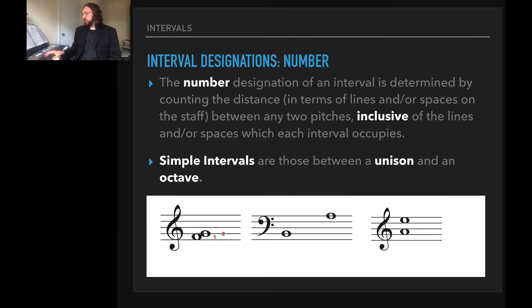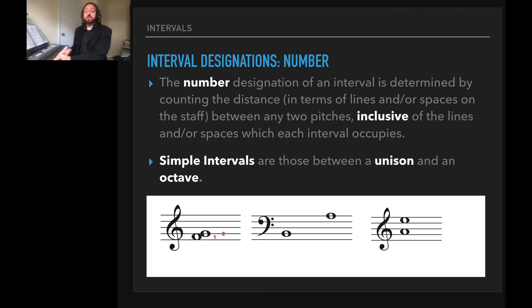From the B to an A, we'd count up: one, two, three, four, five, six, seven — just like that.